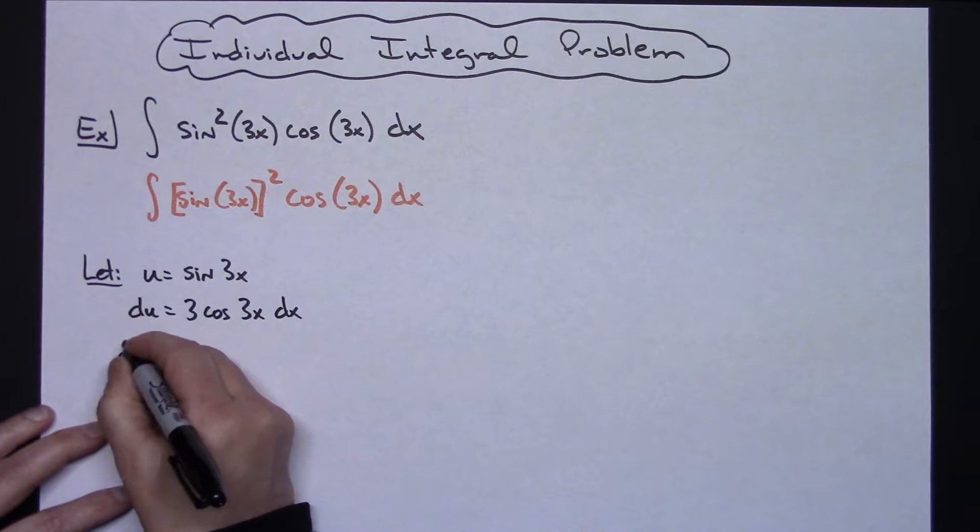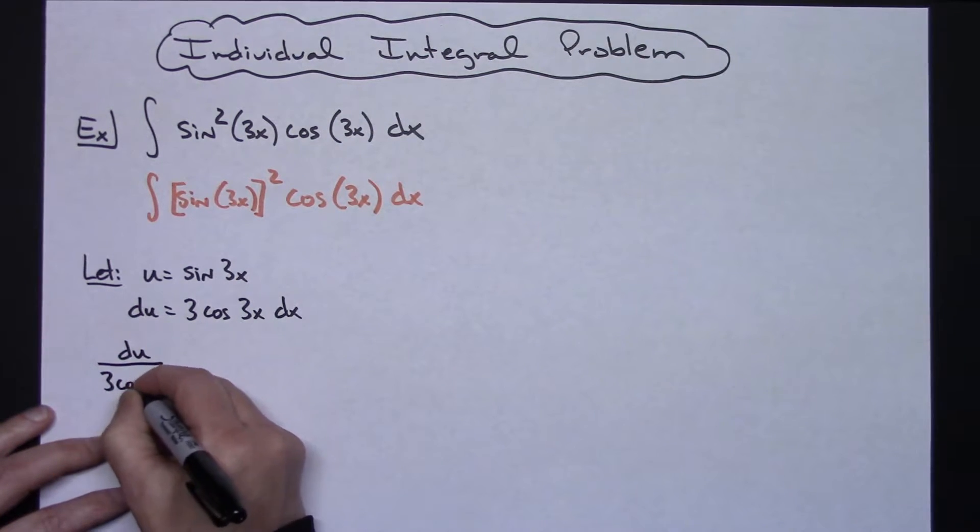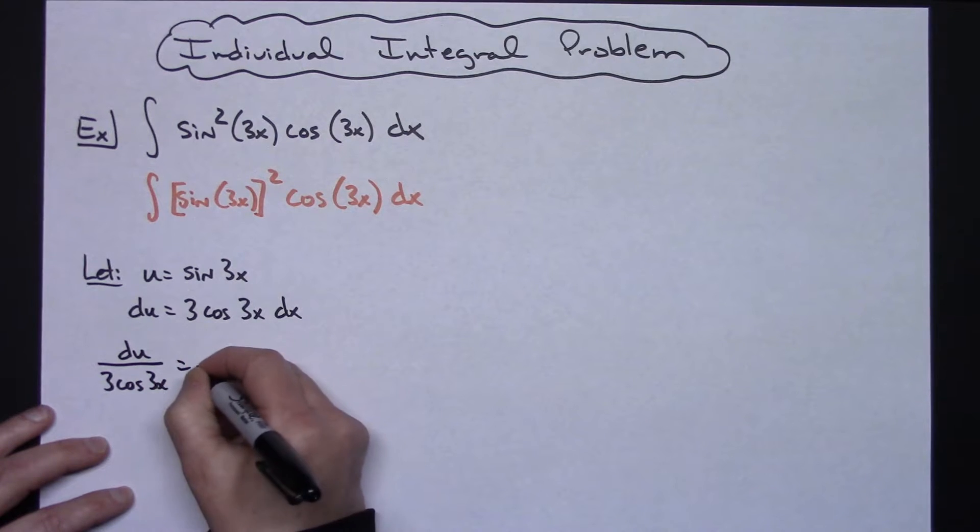Then I can divide both sides by that 3 cosine 3x, so I would have du over 3 cosine 3x equals my dx.